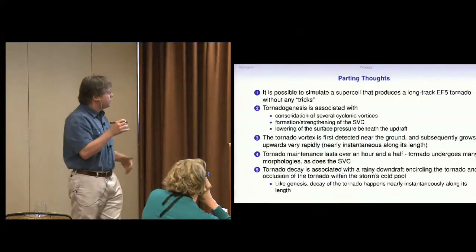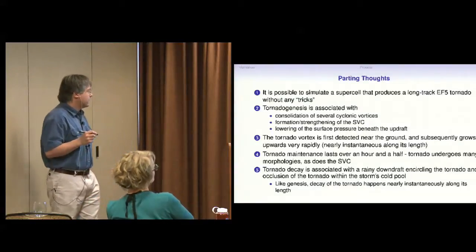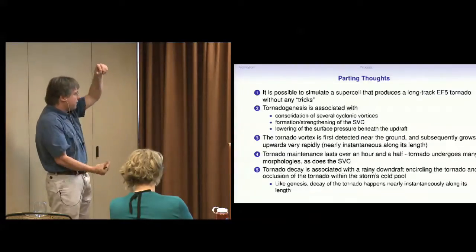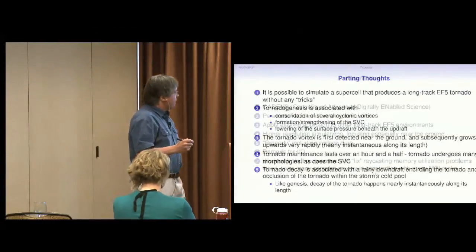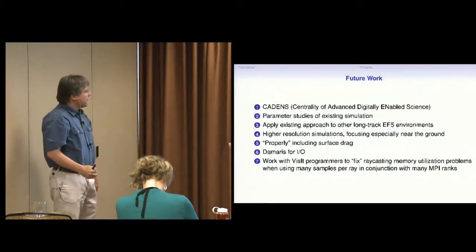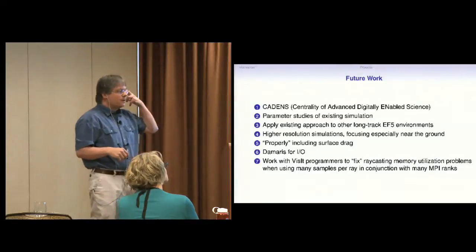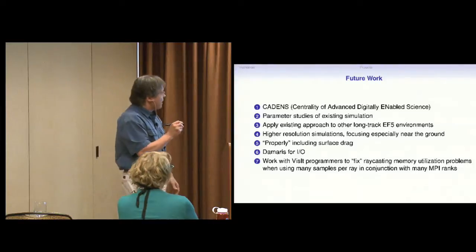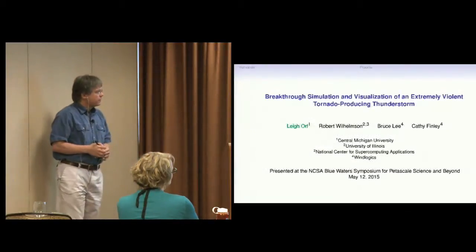So, my parting thoughts. Well, this is possible. You can do this. It's been done. Blue Waters has played a large role in this. We see consolidation of vortices. This feature we're calling the Streamwise Vorticity Current is important in tornado genesis and maintenance. You see a lowering of the pressure beneath the updraft as the tornado forms. You see the vortex forming near the ground and sort of stretching upwards. It's nearly instantaneous. The tornado maintenance phase is very long. You see a lot of morphologies going on. It's quasi-steady, but there's a lot of unsteady behavior there. And then decay is associated with lots of downdrafts. So, future work, I'm hoping to be involved in the Cadence project. We hope to do parameter studies or ensembles at this resolution. I want to do higher resolution. I want to apply to more storms. I want to properly include surface drag. I might change my IO regime. Please talk me out of that because my current IO regime works, but I want to make it better. And I want to work with divisive programmers to deal with a really nasty issue that I have at least with trying to get really high fidelity volume rendering when using lots of cores and lots of samples per ray. And that's my talk. Thank you.